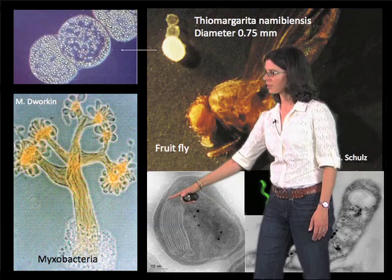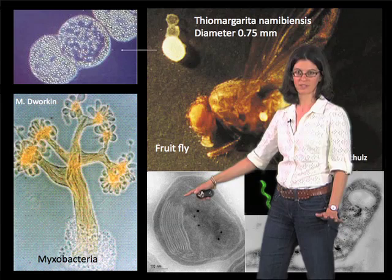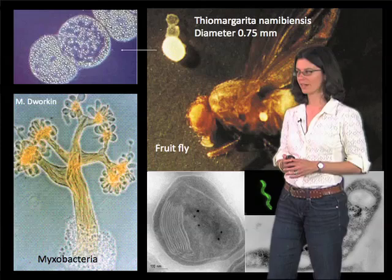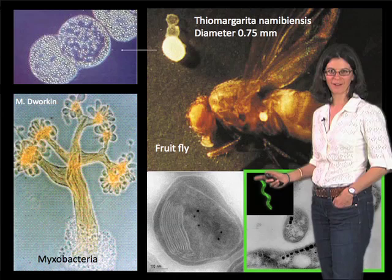How these various structures form — these are what we call the inner cytoplasmic membranes, where the photosynthetic machinery is housed — in terms of the detail of what creates their shape, is an open and exciting question that future microbial cell biologists will no doubt solve.